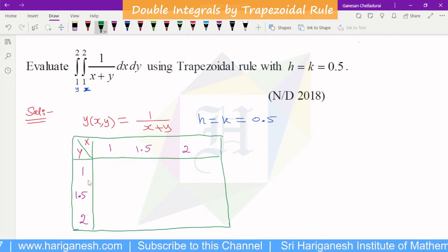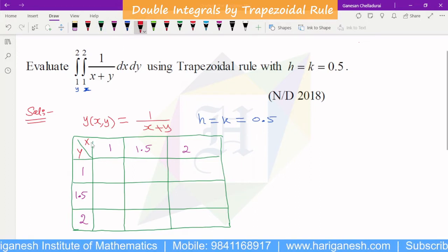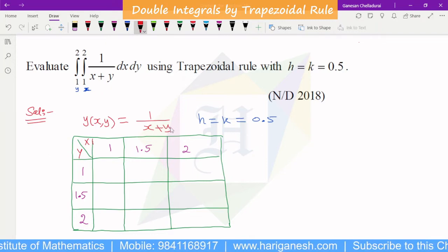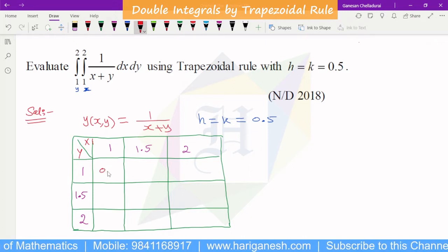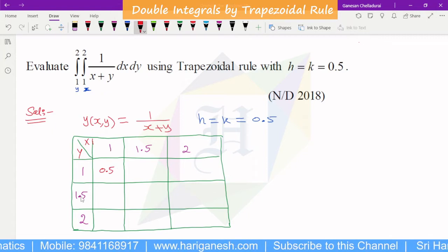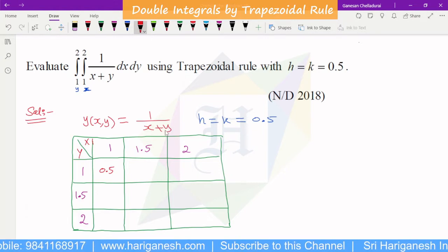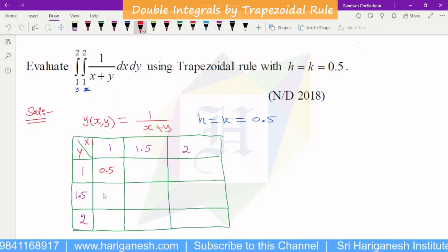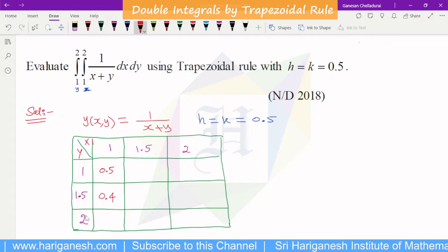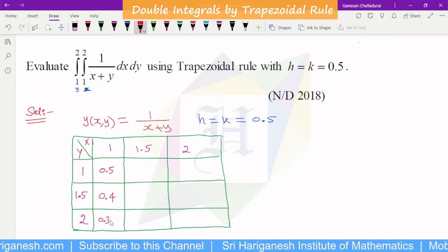If you need the table to fill up, x is 1, y is 1, 1 by 2 is 1 by 2, which is 0.5. x is 1, 1 by 1.5, x is 1 by 1.5 is 2.5, 1 by 2.5 is 0.4. x is 1, y is 2, 1 by 2.5, 1 by 3 value is 0.3333.